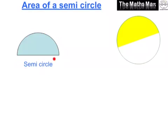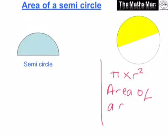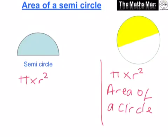Here is our semicircle, and as we can see we have a full circle over here on the right. A semicircle is just half of the circle. We know that the area of a circle is equal to pi times r squared. Now we know from the pictures that this full circle when we divide it in two we get two semicircles. So we're also going to do the same to our equation — we're going to divide our answer by two, and this will give us the area of a semicircle.